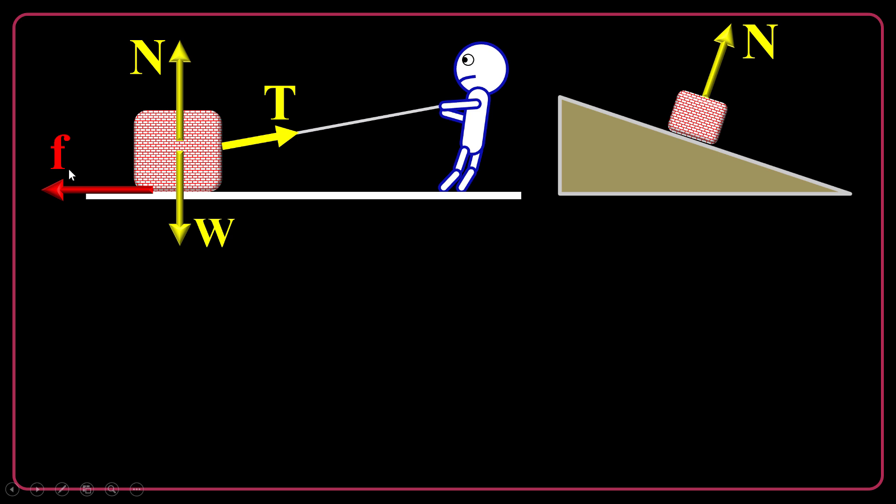The other is the friction. When the objects are rubbed against each other, for instance, this box is rubbed on the ground, or you can say, sliding over that. A friction force is impeding the motion, opposing the motion. This is called friction.